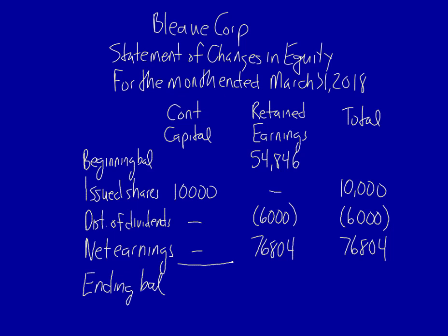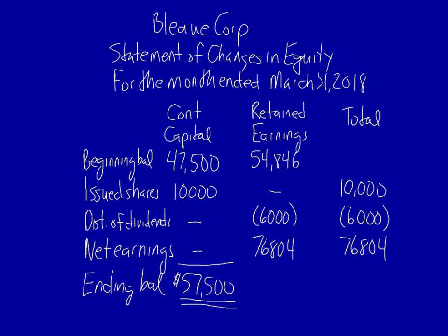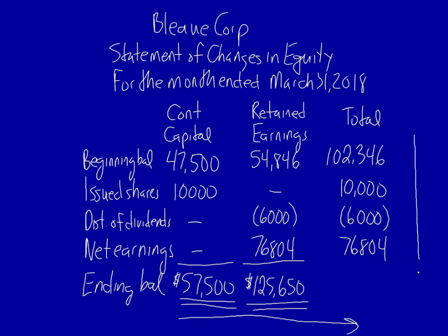The ending balance in contributed capital was given to us on the listing: fifty-seven thousand five hundred. We can therefore work backwards to discover the beginning balance of forty-seven thousand five hundred. We can use that information added to beginning retained earnings to find the total amount at the beginning of the period. We can now add up the retained earnings column to get the ending retained earnings balance, then add the amounts together to come up with the final total equity.